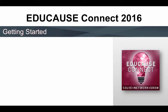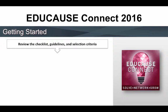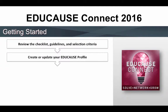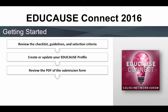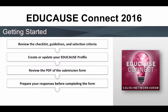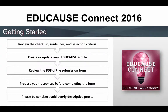Here are a few tips to help you get started with the call for proposal. Review the checklist, guidelines, and selection criteria provided on the Conference Call for Proposal page. Make sure your Educause profile is up to date, or if you don't have one, create one now. Review the submission form. You may want to print the form and use it to prepare your submission content before beginning your actual submission. Be concise. Avoid overly descriptive prose throughout your proposal.